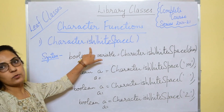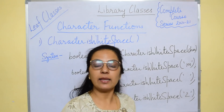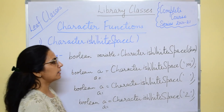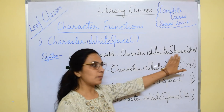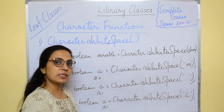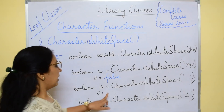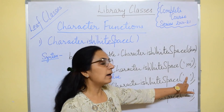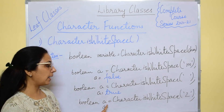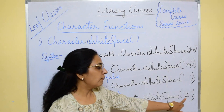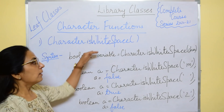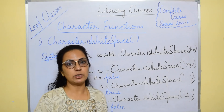The next function is Character.isWhitespace(). The syntax is: boolean variable = Character.isWhitespace(character). For example, Character.isWhitespace('m') returns false since m is not a space. But Character.isWhitespace(' ') — passing a blank character — will obviously return true because it checks for the blank. If it is blank the answer is true, otherwise false. Passing '2' as argument also returns false since 2 is not a space. So this function checks for the blank; if it is a space, the answer will be true, otherwise false.